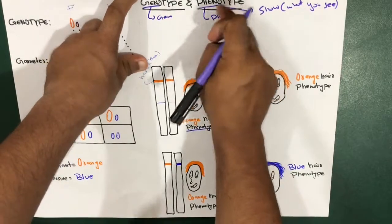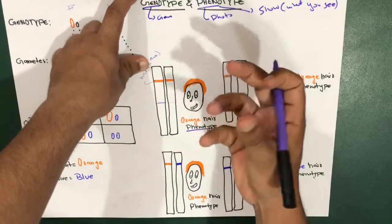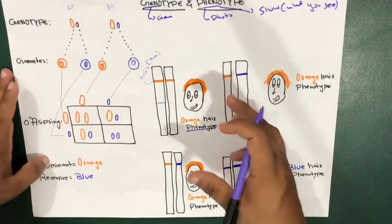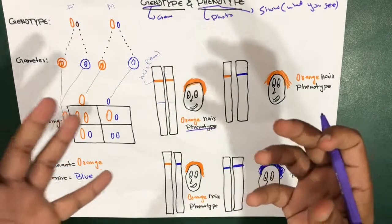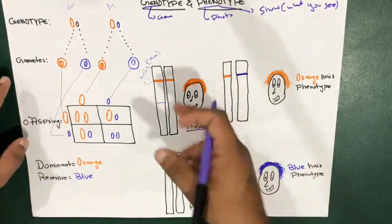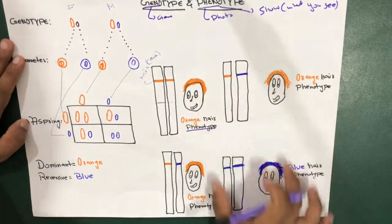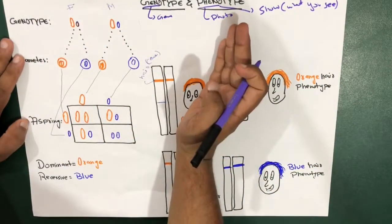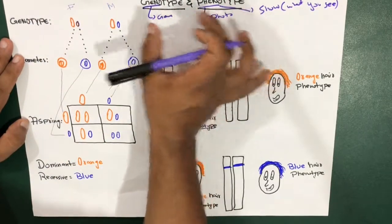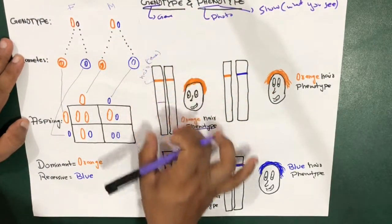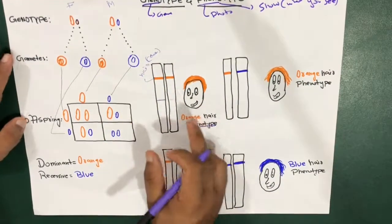The phenotype comes from the genotype because if the gene is showing something, that has to be shown outside. This is the reason why most parents and children look alike — this is all because of genotype and phenotype. So you've got the concept: genotype is the genetic constitution, and phenotype is what you see because of the genotype.